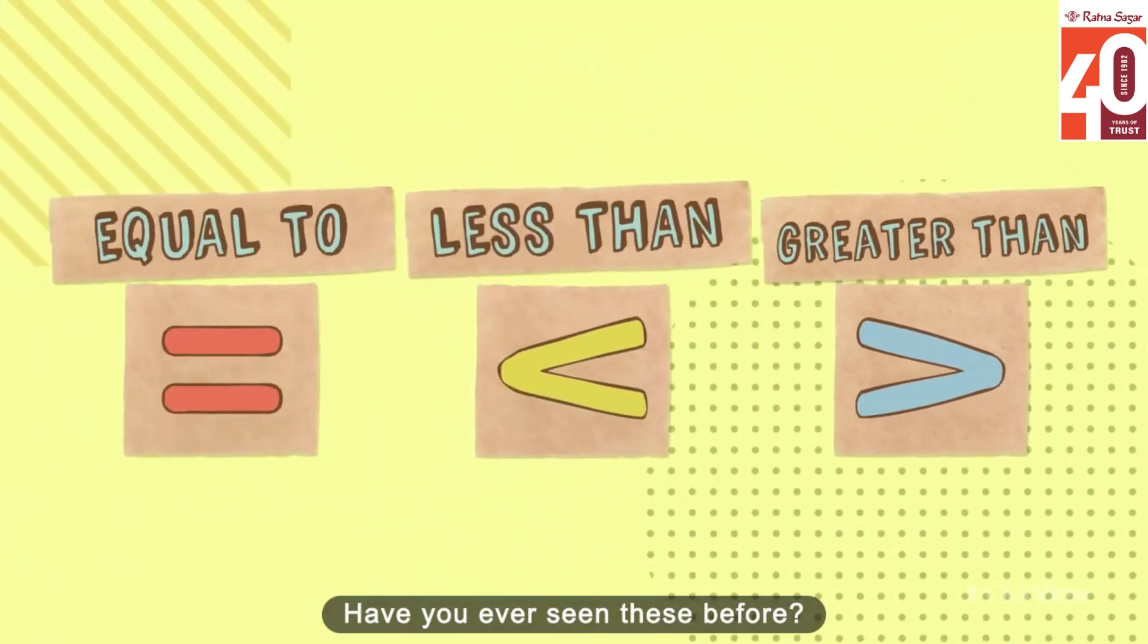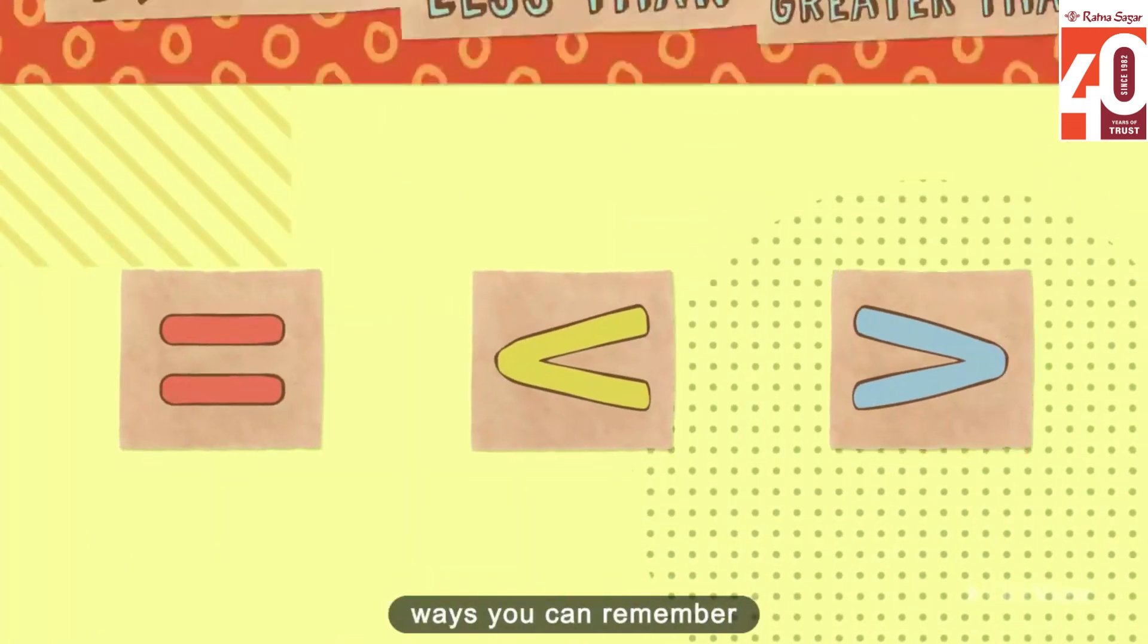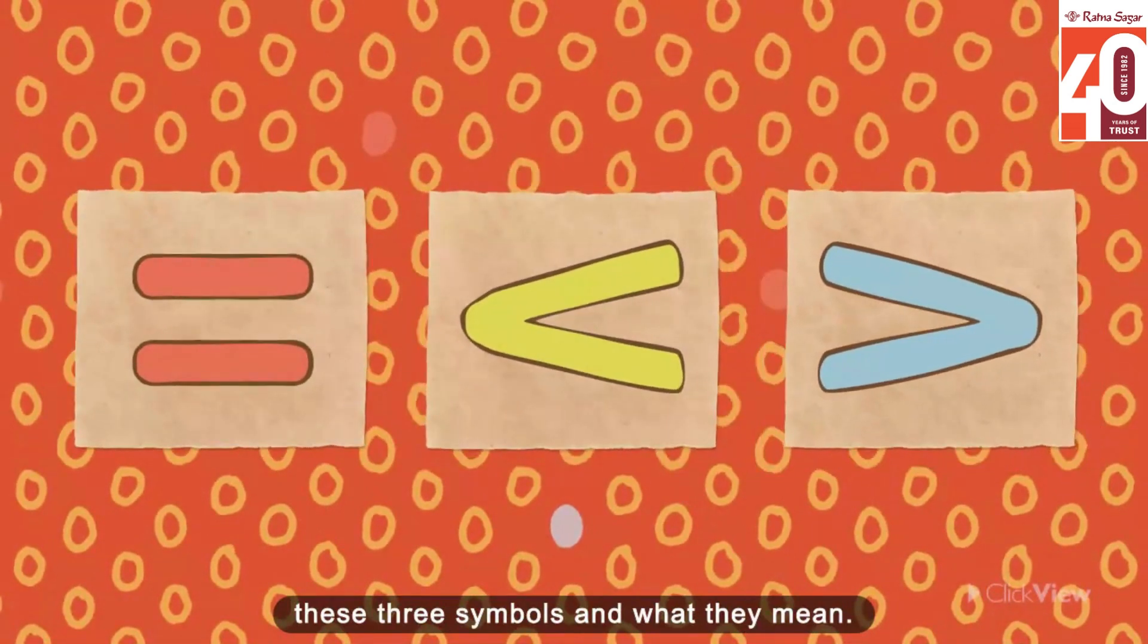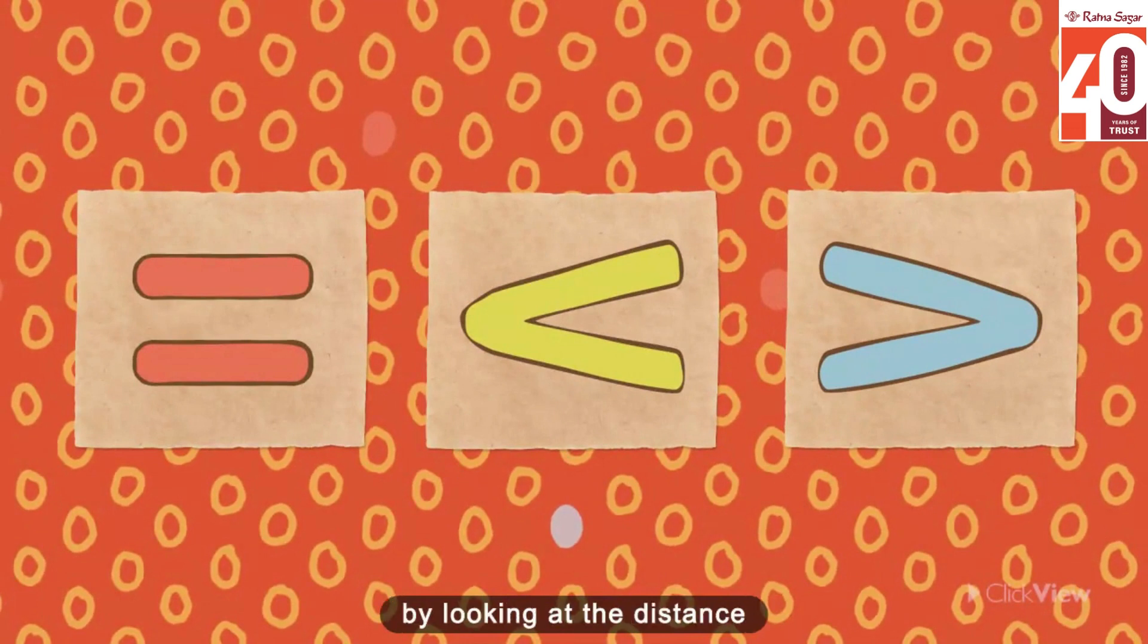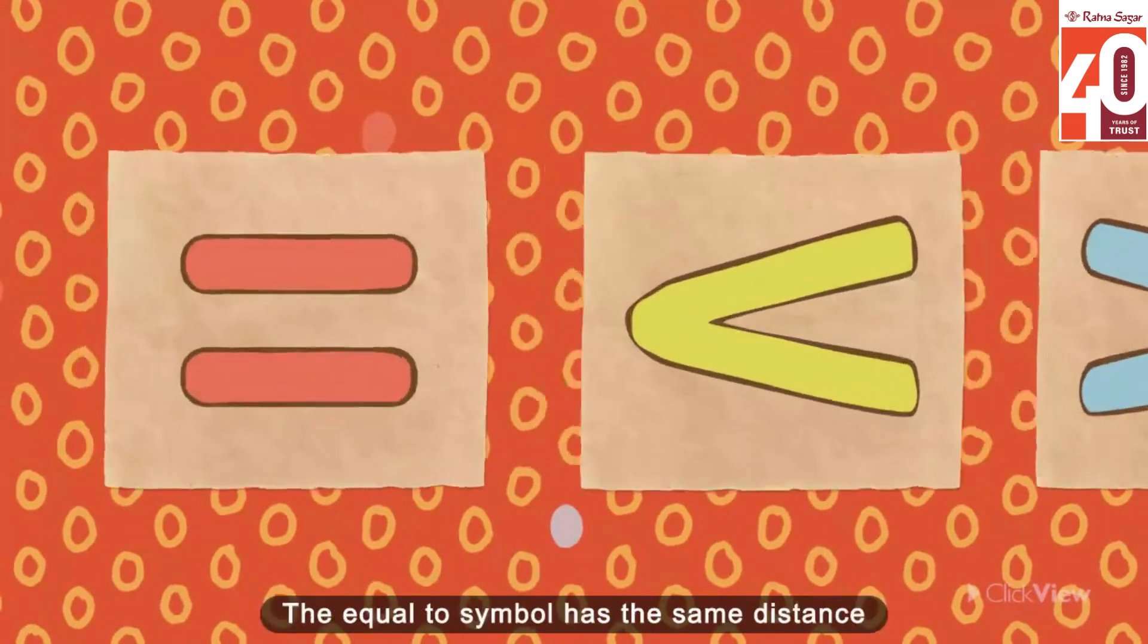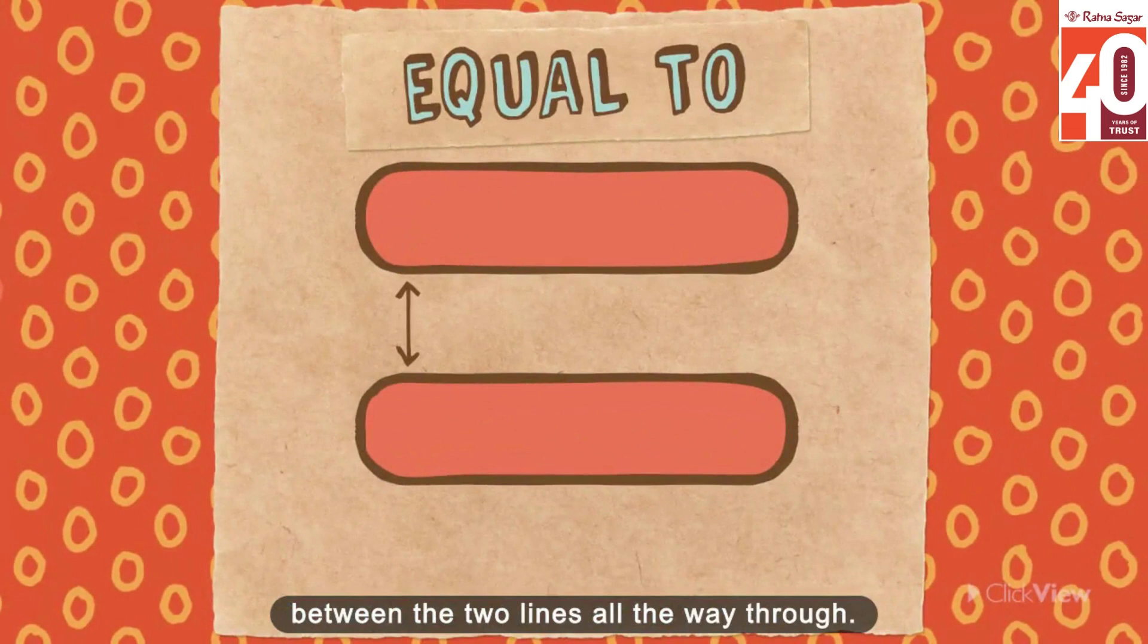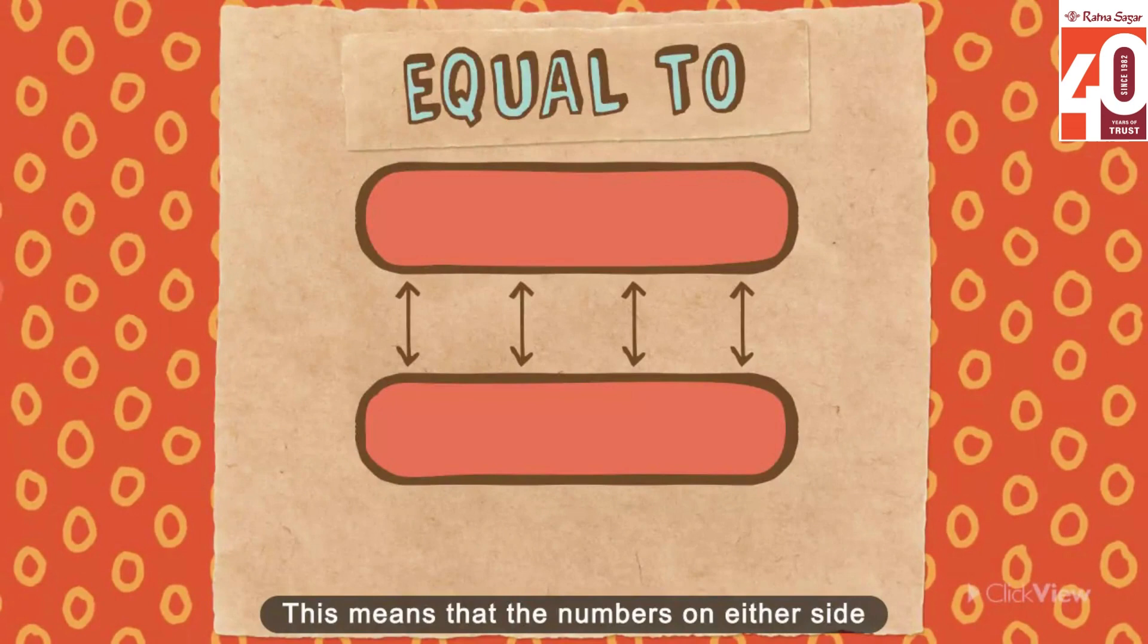There are many different ways you can remember these three symbols and what they mean. One super simple way is by looking at the distance between the lines in each symbol. The equal to symbol has the same distance between the two lines all the way through. This means that the numbers on either side of the symbol have the same value.